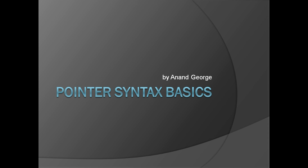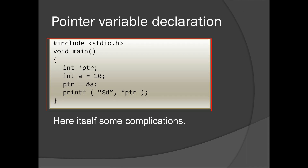In this presentation we will discuss the basics of pointer syntax. We're going to get into some of the complications of pointer syntax in C. Here is a small program with a pointer variable in it. This is a C pointer variable declaration: int star PTR. We have a local variable int a equal to 10, int ptr equal to ampersand a, and printf of %d star ptr.